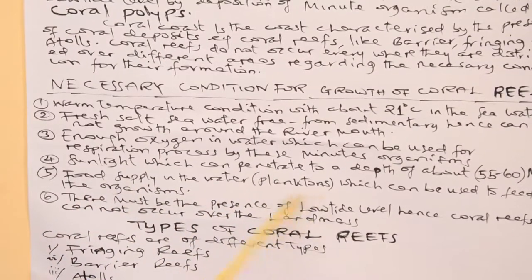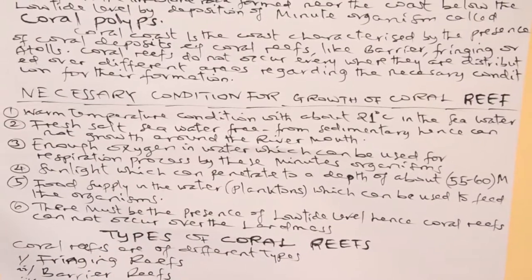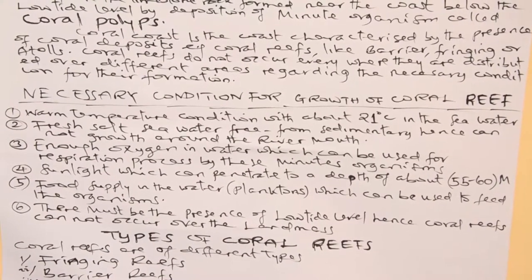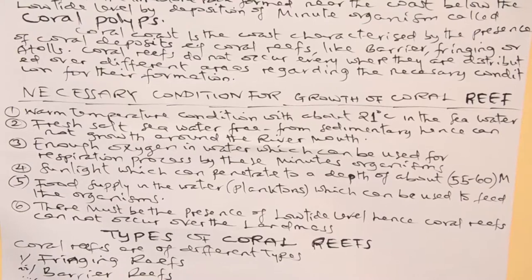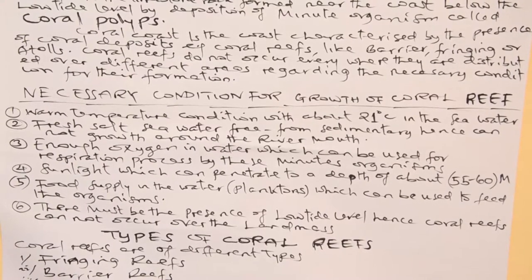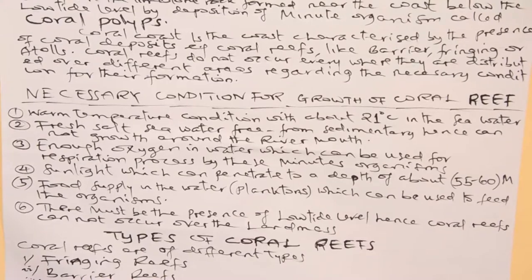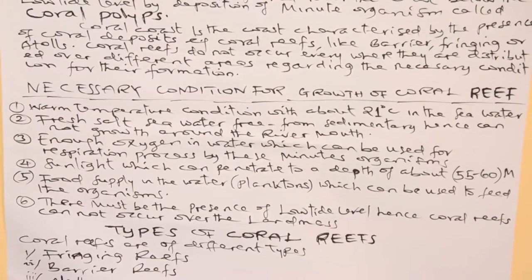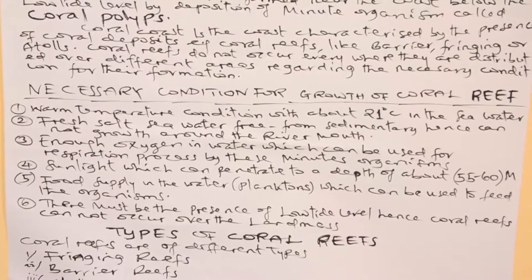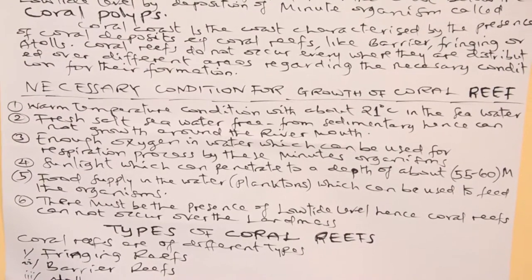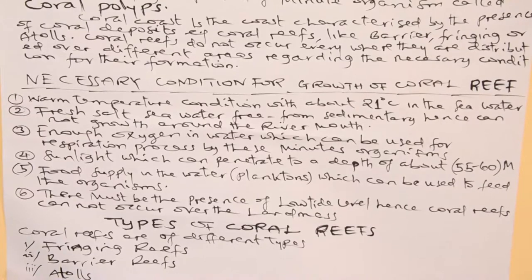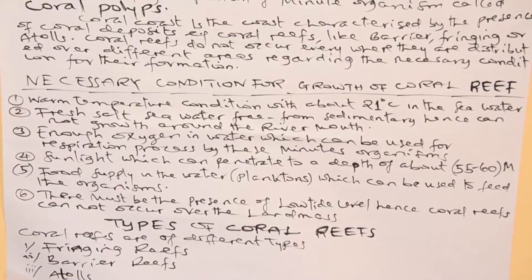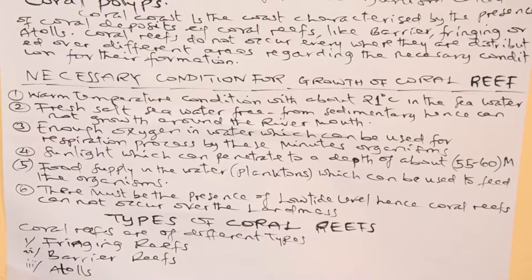Another condition is the food supply in the water. For instance, an organism called plankton, which can be used to feed the organism. This organism called polyps should be fed on foods like plankton. These planktons are plants growing in those areas which this organism can consume so as to exist as its food.